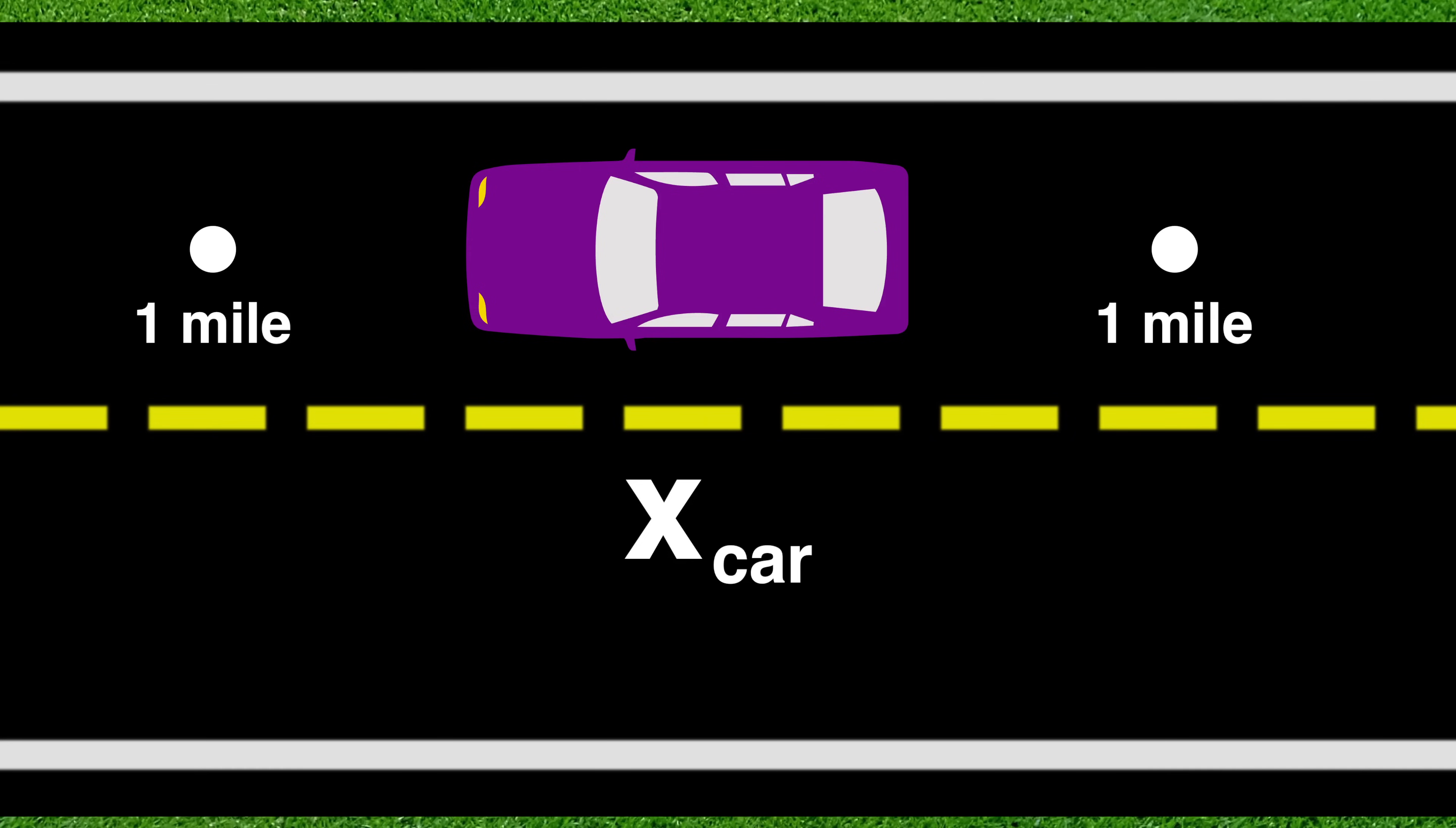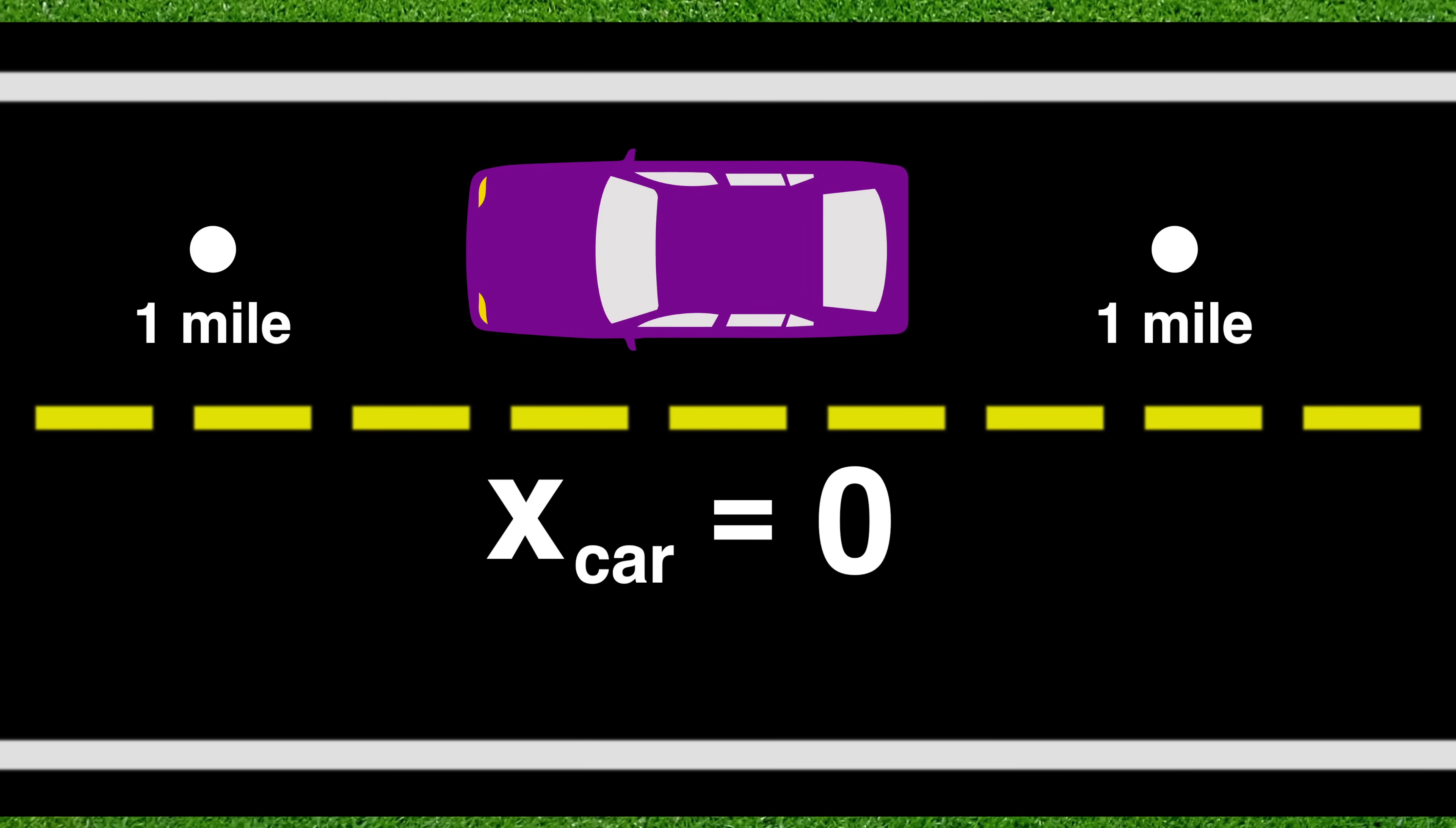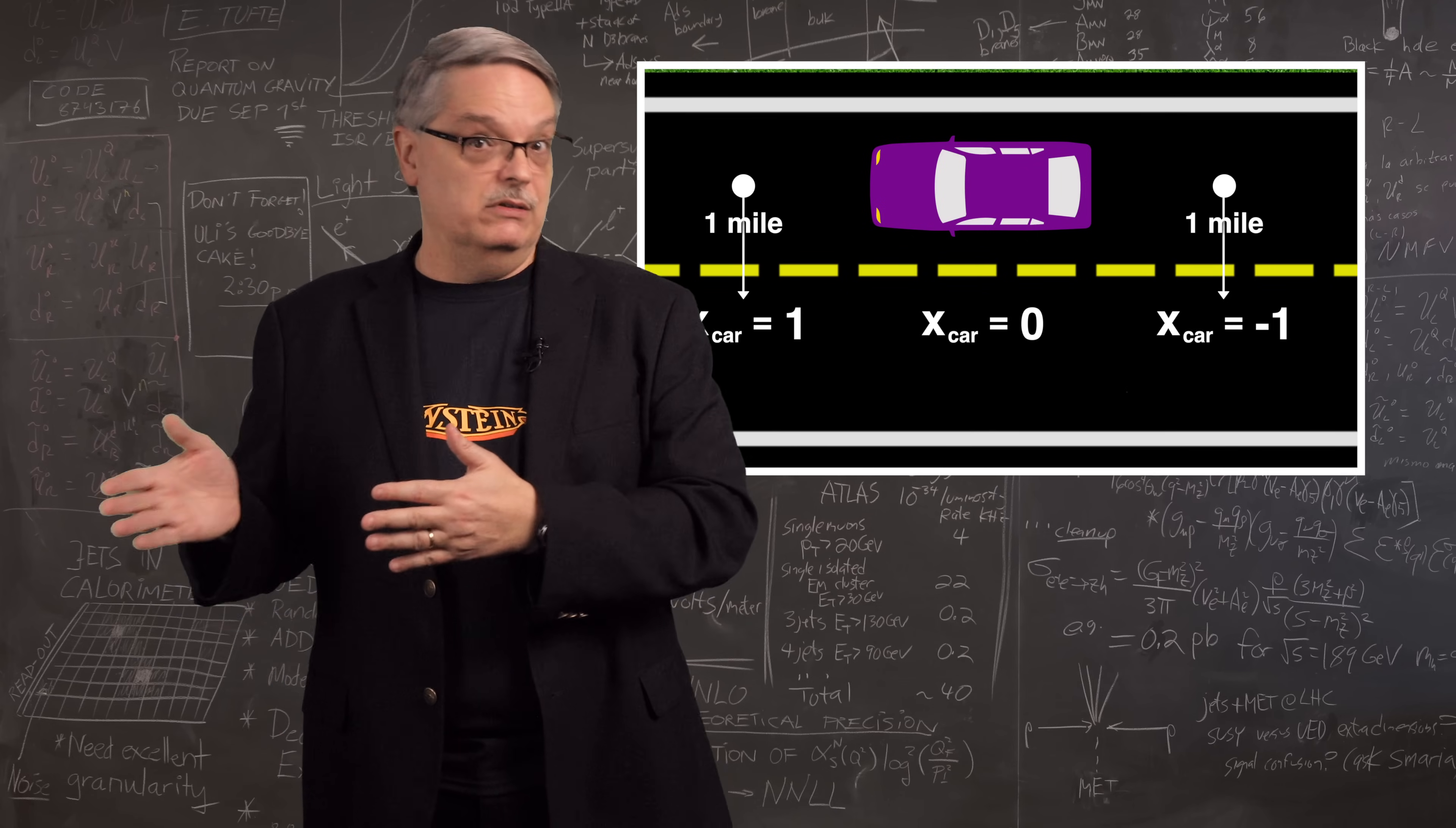We can even hang some numbers on that. We'll say that the car guy is at location x subcar equals zero. That means that he is at the center of his universe. And remember, we did say that he was a raging egomaniac. Now the location a mile ahead of him is simply x subcar equals plus one mile. While the location behind him is x subcar equals minus one mile. So this establishes the world from the viewpoint of the car guy.